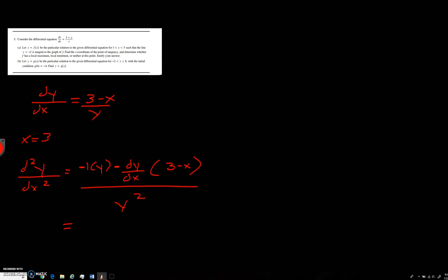So when you simplify this and replace, you're going to get negative y minus quantity 3 minus x over y times 3 minus x over y squared.